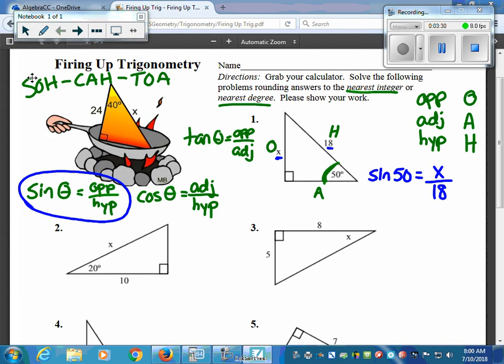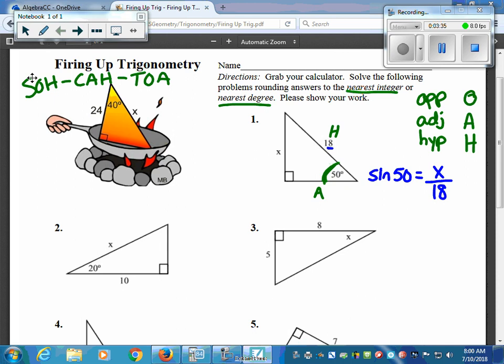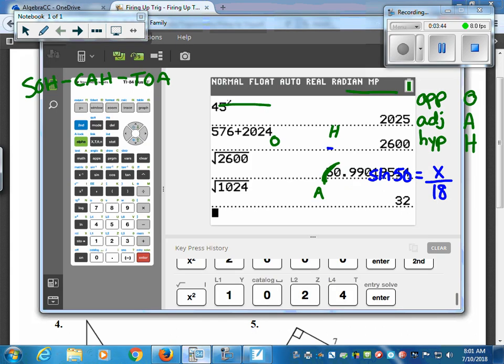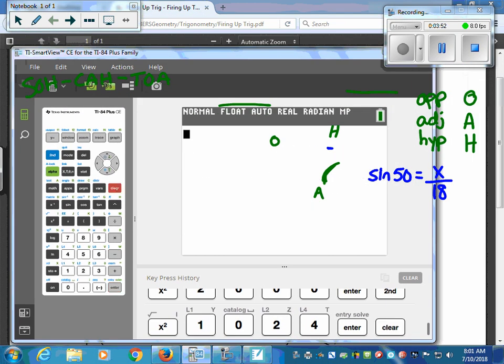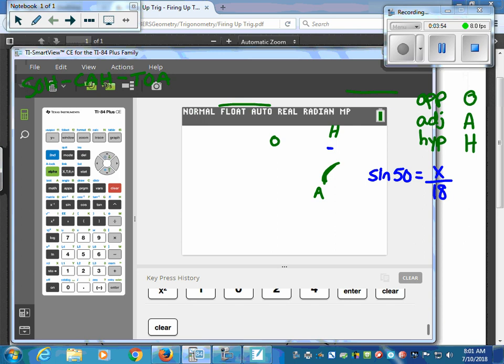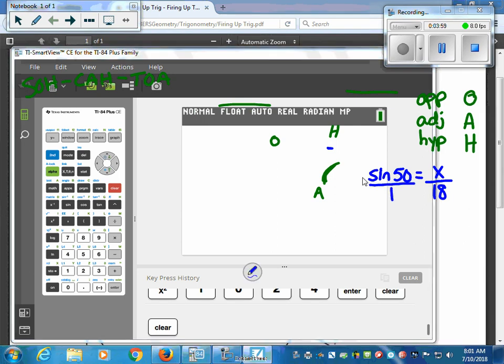Now I'm going to use my calculator to help me figure out that answer. And we're going to use a little cross-multiplying for it, and usually my students are pretty good with cross-multiplying. So I'm going to put sine of 50 over 1, and we're going to cross-multiply. So X over 1 would just be X, and then we have sine of 50 times 18.